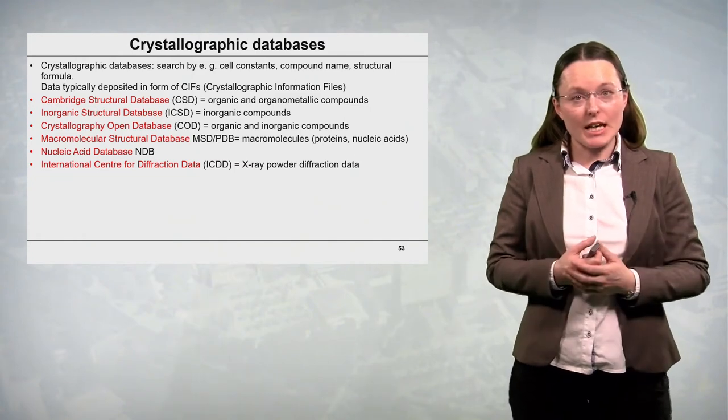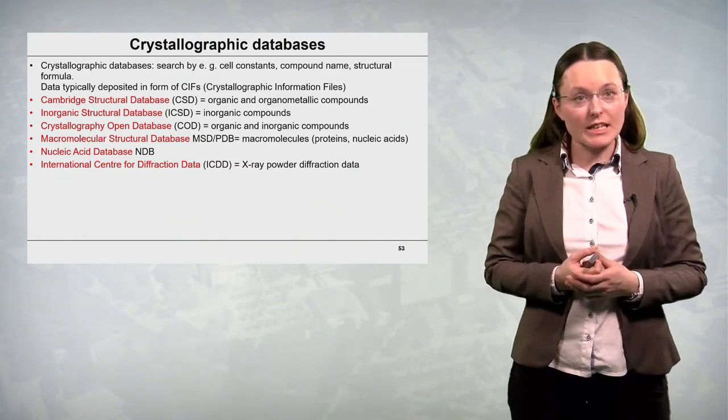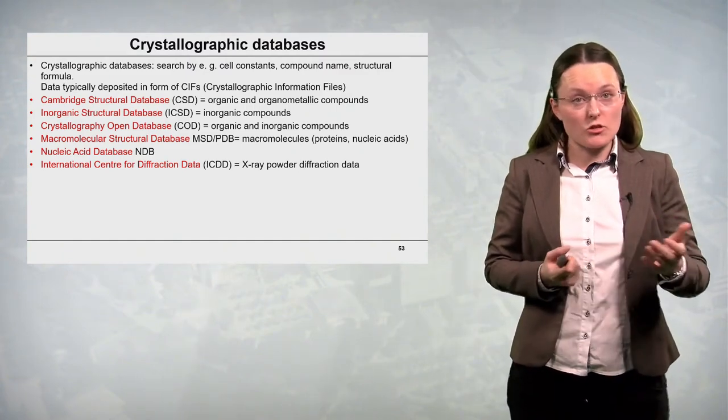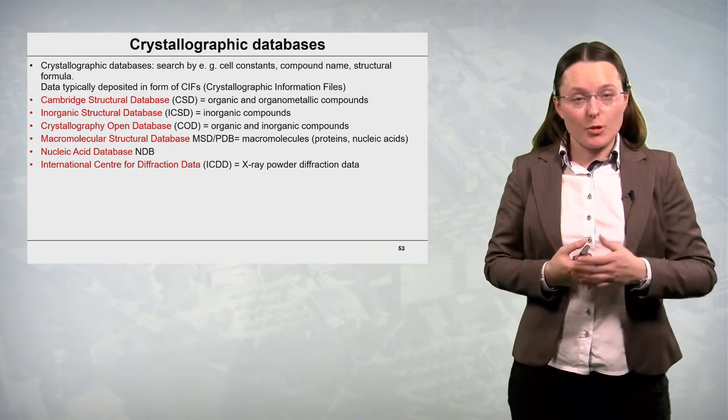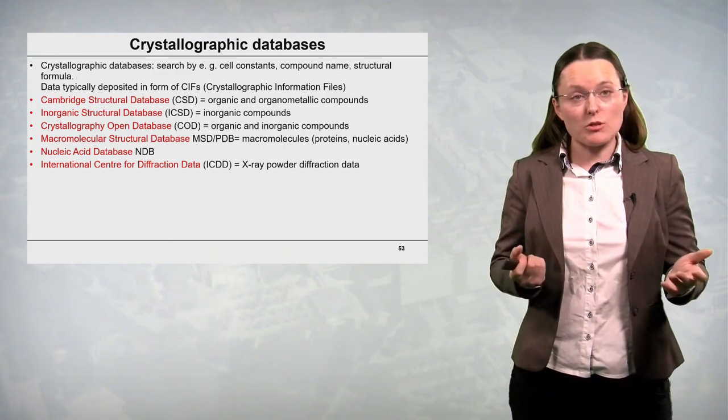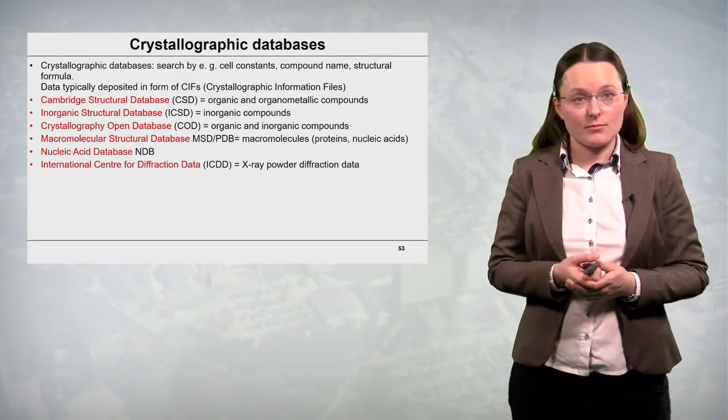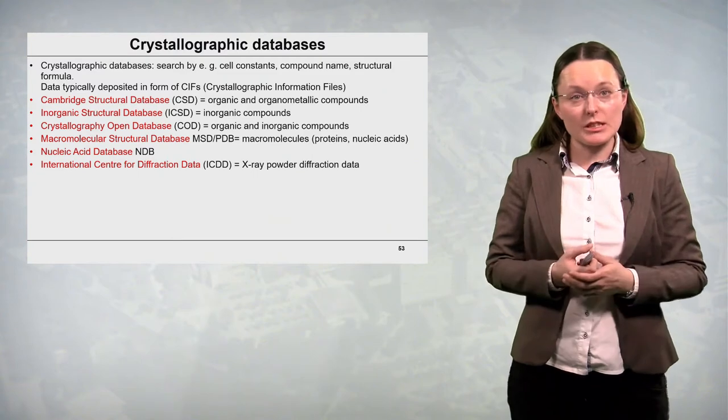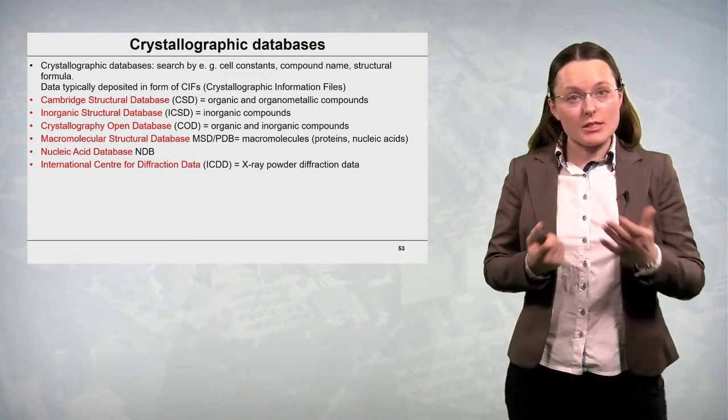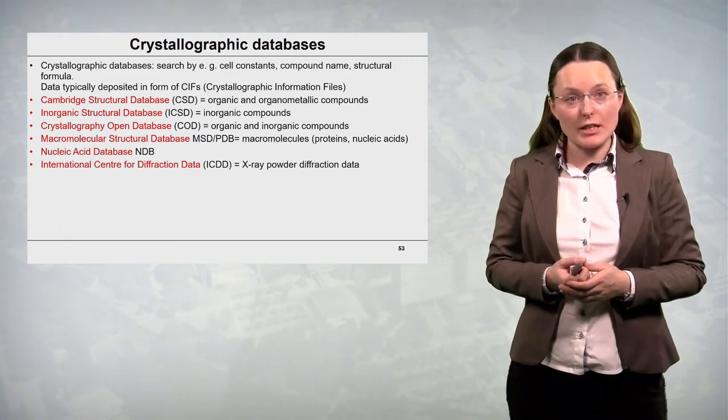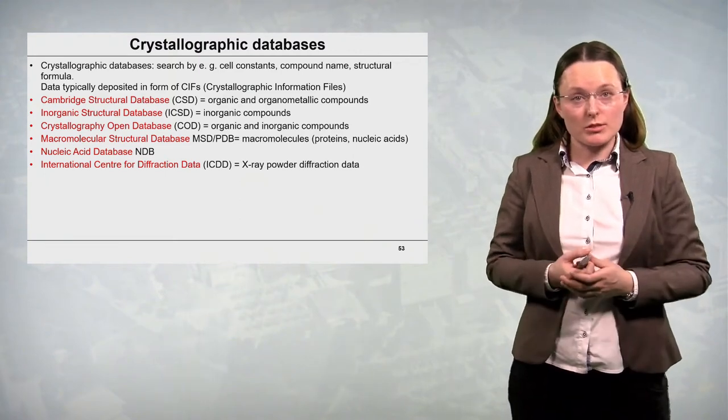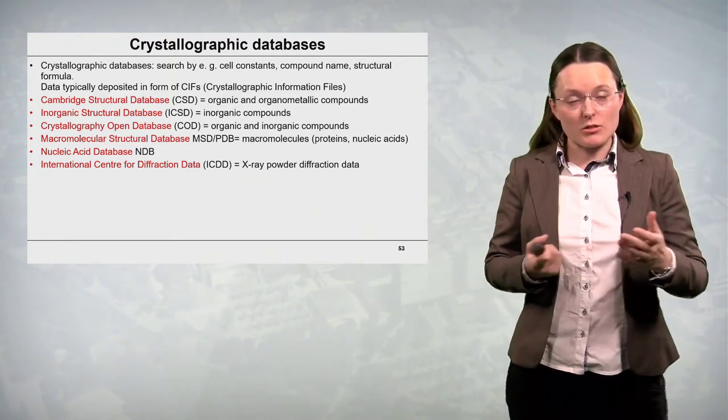Crystallographic data are stored in crystallographic databases. In crystallographic databases you can search by providing the values of cell constants, compound name, or even structural formula or its fragment. And these data are typically deposited in certain format. This is the so-called CIF format or crystallographic information file format.